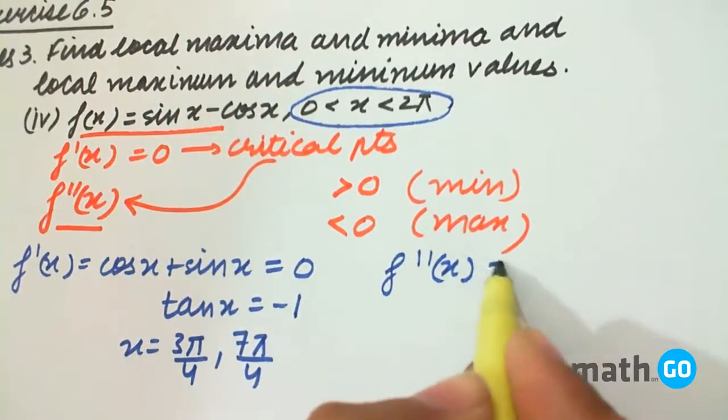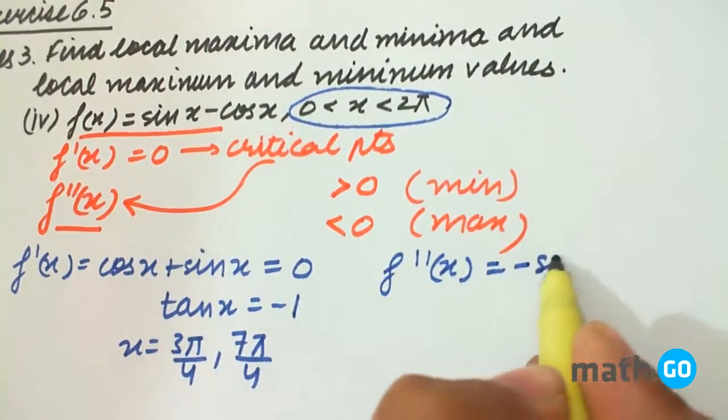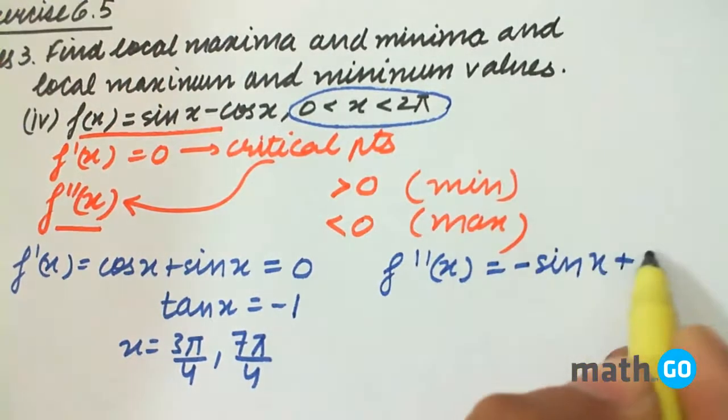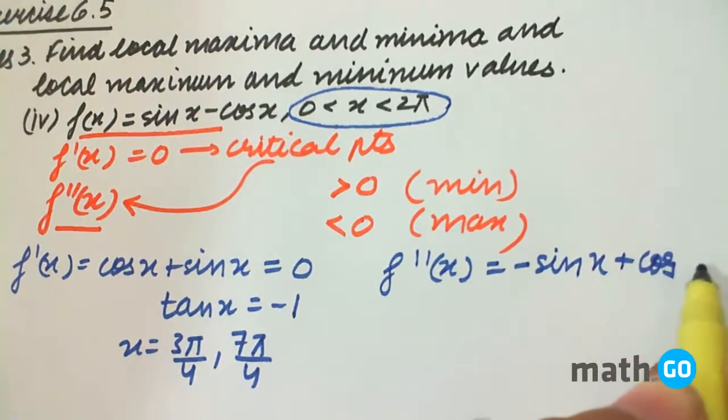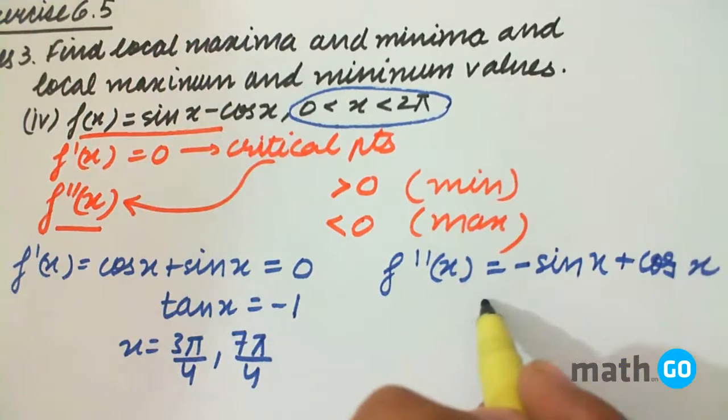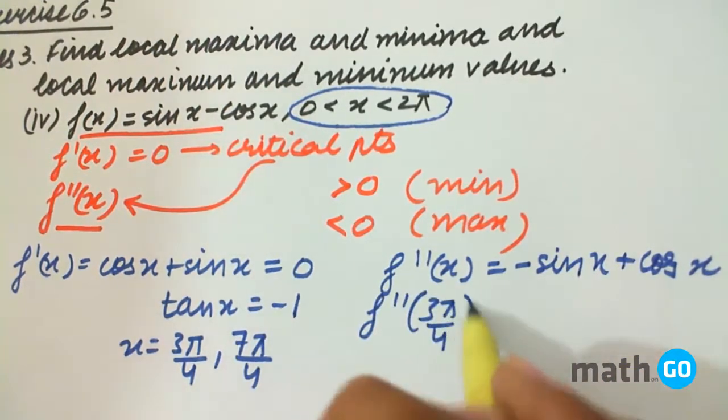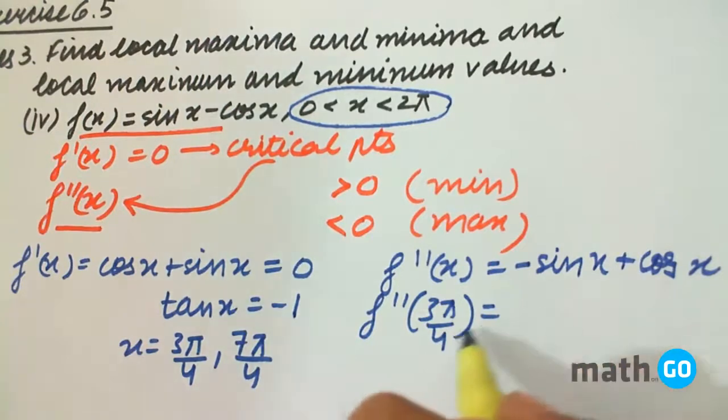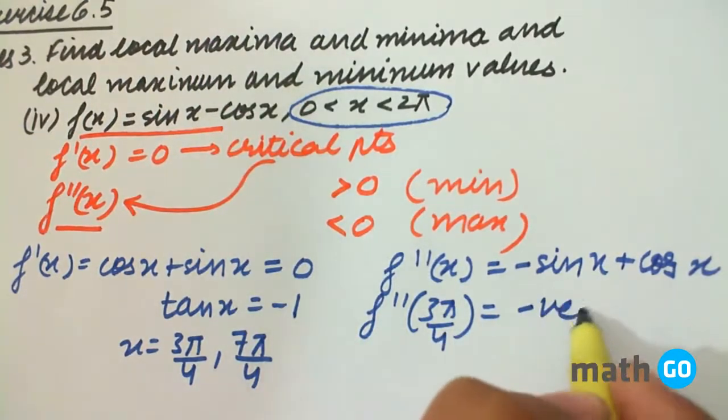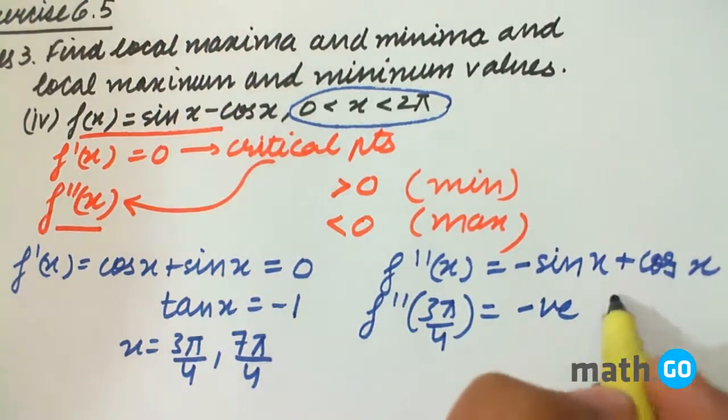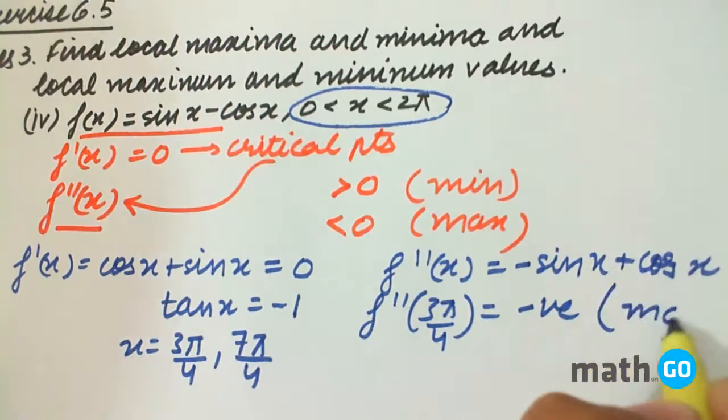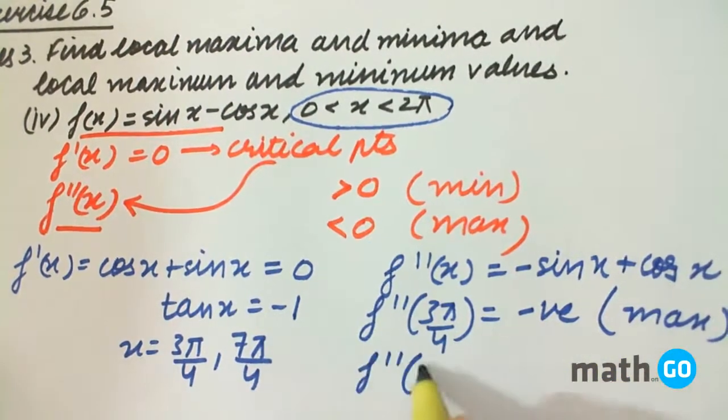f''(x) is minus sin(x) plus cos(x). So f''(3π/4) comes out to be negative, therefore it is a point of maximum.